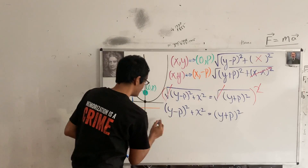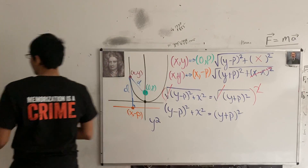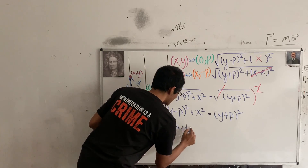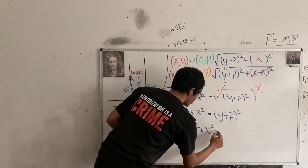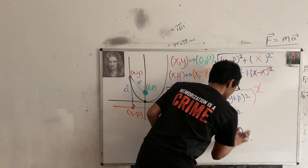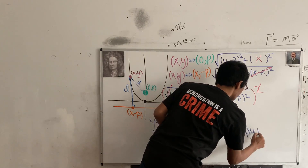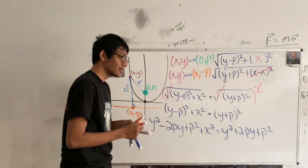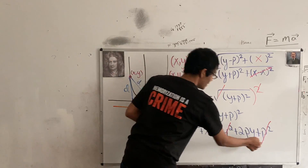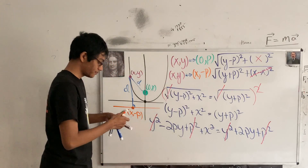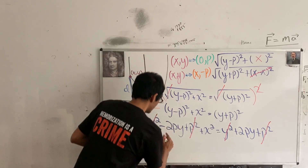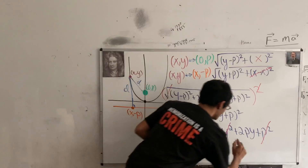Expanding the left side gives y squared minus 2py plus p squared plus x squared. The right side expands to y squared plus 2py plus p squared. The y squared terms cancel with each other, and the p squared terms cancel as well, leaving x squared minus 2py on the left and 2py on the right.